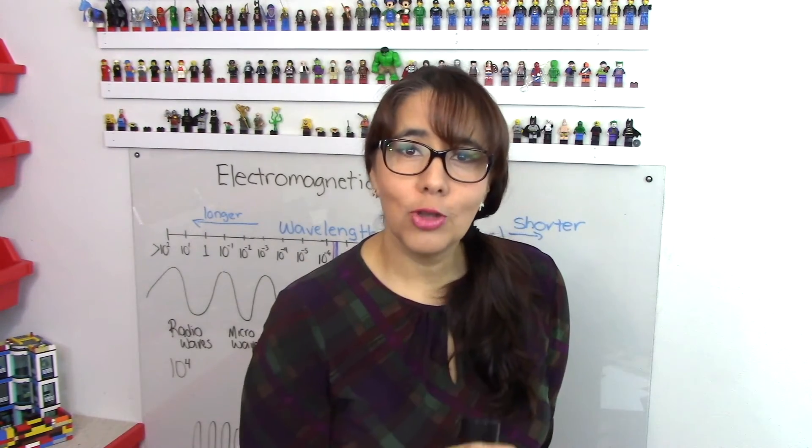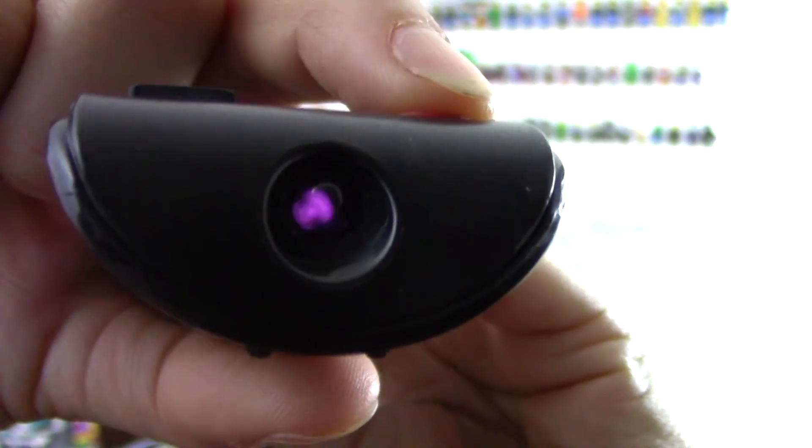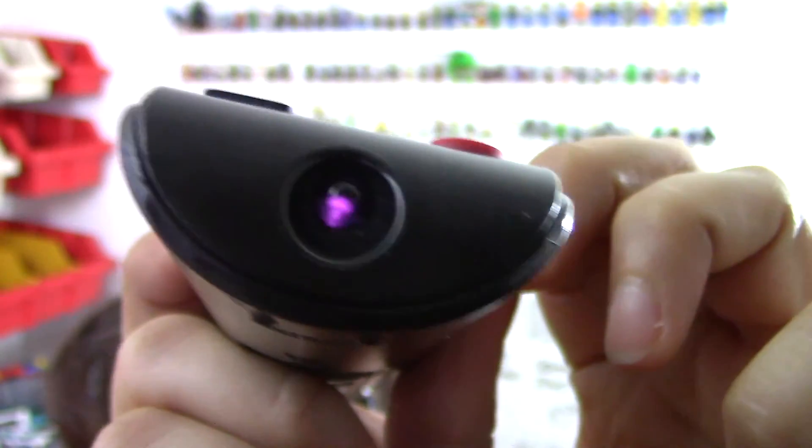I'm going to show you something — cameras can actually see infrared light. This camera has some filters, but my cell phone doesn't have those. I'm turning the TV on, now I'm going to change the channel, now I'm going to increase the volume.